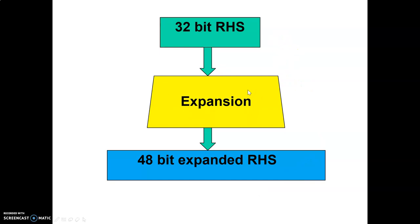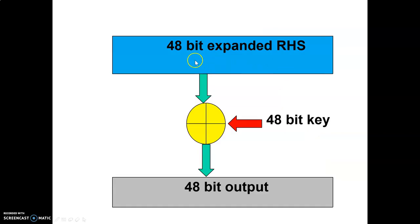Let's talk about how the expansion process is carried out. The 32-bit right hand side is going to be expanded into 48-bit right hand side. Then this 48-bit right hand side is going to be XORed with the 48-bit key, which will result again in 48-bits.